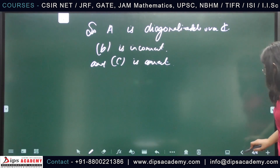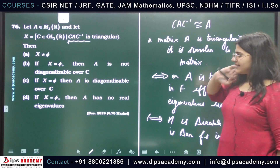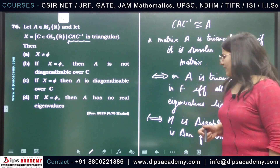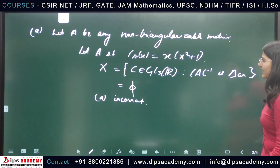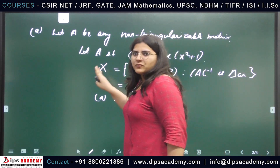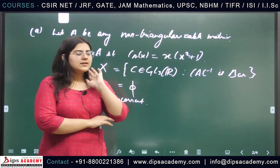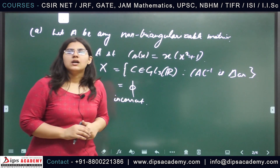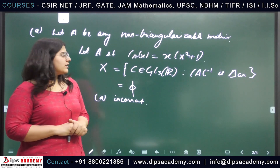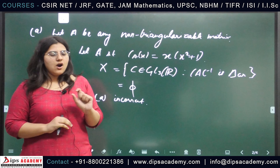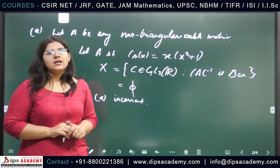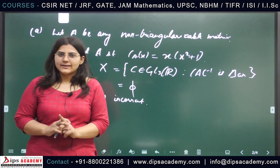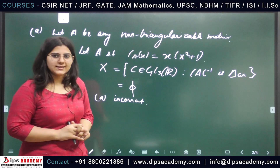Now for option D: it states that if X is empty then A has no real eigenvalues. This is incorrect. As we saw in our example, the characteristic polynomial x(x²+1) gives A a real eigenvalue even when X is empty. Moreover, A is a 3×3 matrix, so its characteristic polynomial is a degree-3 polynomial with real coefficients, which must always have at least one real root. So A always has at least one real eigenvalue, and option D is also incorrect.